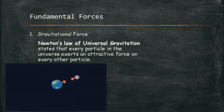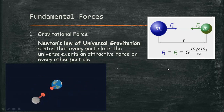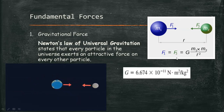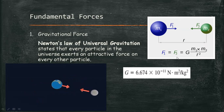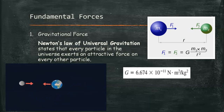For two particles that have masses m1 and m2 and are separated by a distance r, the force that each exerts on the other is directed along the line joining the particles and has a magnitude given by F = G times m1 times m2 over r squared, where G is the universal gravitational constant, whose value is found experimentally to be 6.674 × 10⁻¹¹ N·m²/kg².